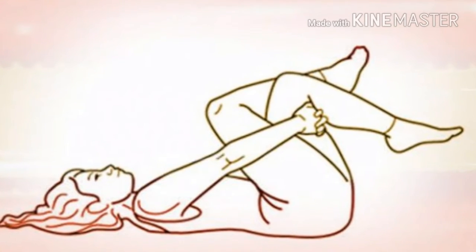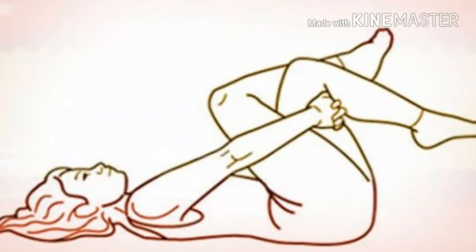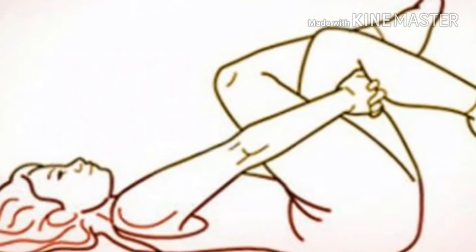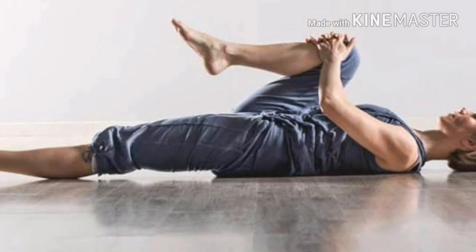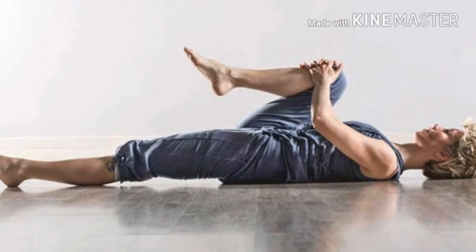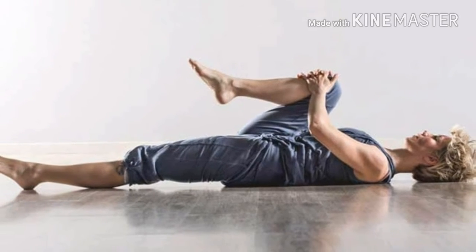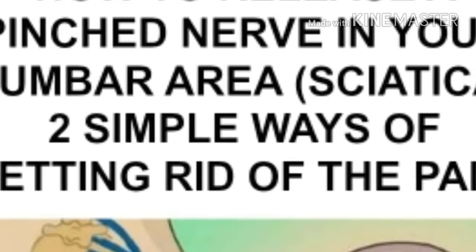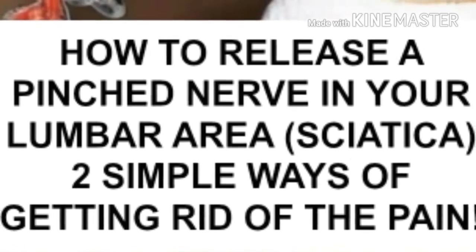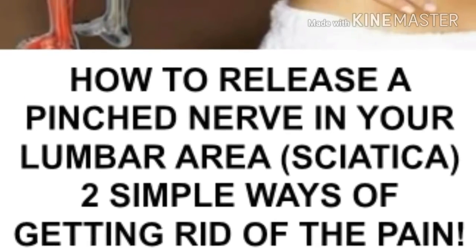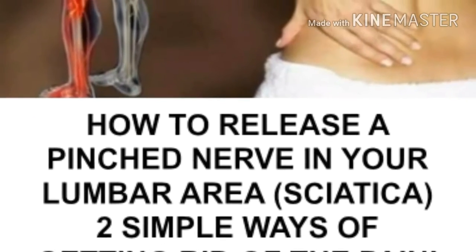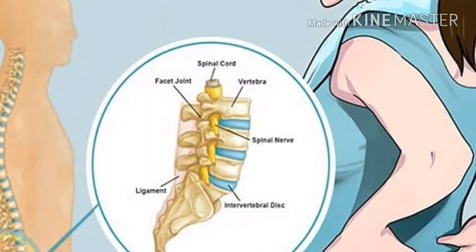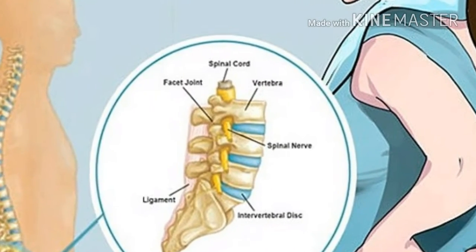Exercise one: Lie down and cross the painful leg over the other one at the knees and bend both legs. Then pull the knee up gently towards the shoulder on the same side of the body. When you feel the stretch, hold for 30 seconds and return to the initial position. Repeat three times.